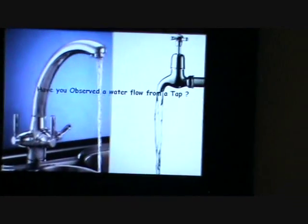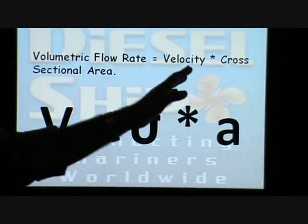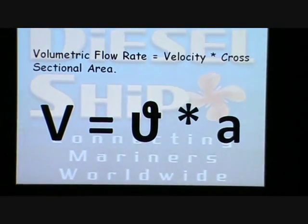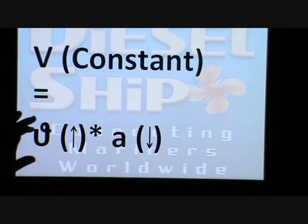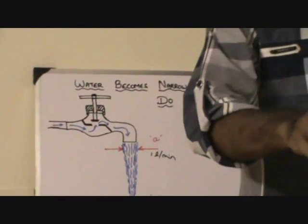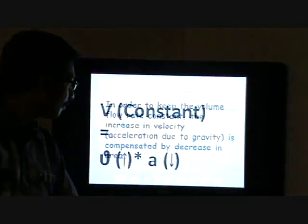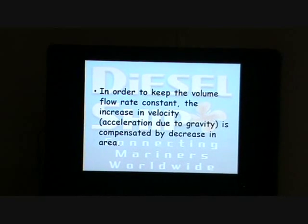To summarize: volumetric flow rate equals velocity multiplied by cross-sectional area. Since the flow rate must remain constant, the velocity increases due to the acceleration due to gravity, and this is compensated by a decrease in cross-sectional area — as shown in the diagram. Next time you open your tap, open it slowly and feel the difference in cross-sectional area at the top versus the bottom. In conclusion, to keep the volume flow rate constant, the increase in velocity is compensated by a decrease in area.